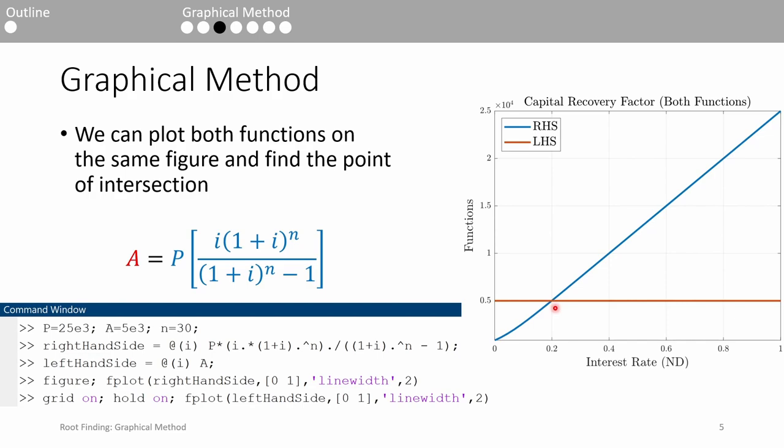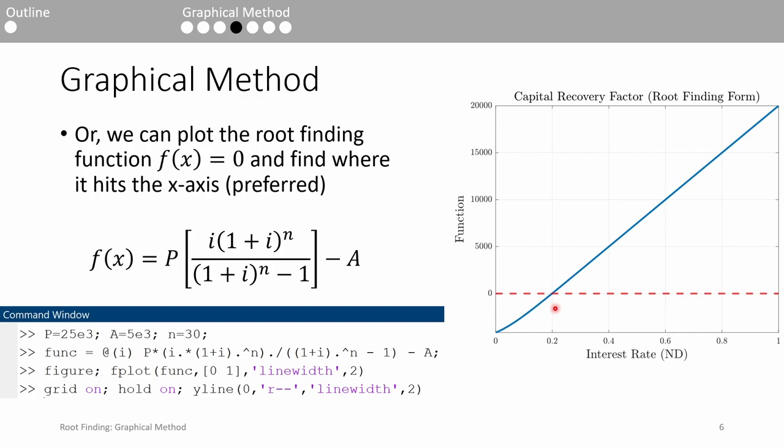The other choice is to plot the equation in root finding form. I like this method better because you already have to rearrange the equation into f of x equals 0 form anyways, so you might as well just plot that equation. Now, we want to look for where the function crosses the x-axis. We see it hits the x-axis around 0.2, which agrees with the plot from the last slide.